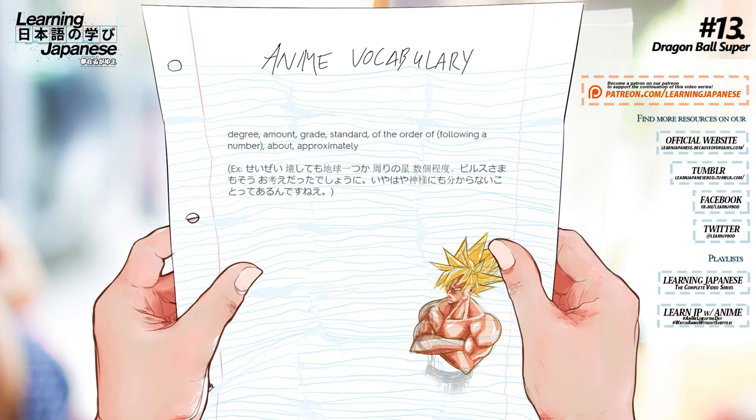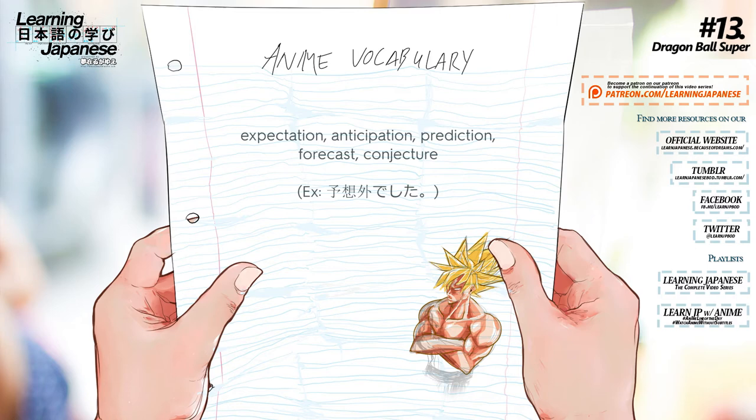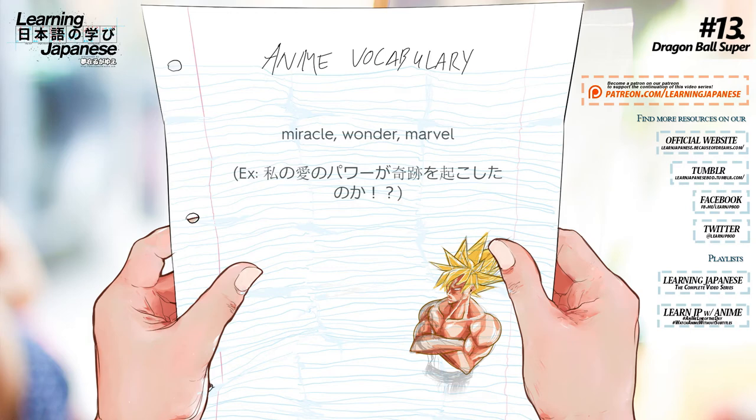数個 — Several. 予想 — Expectation, anticipation, prediction, forecast, conjecture. 奇跡 — Miracle, wonder, marvel.